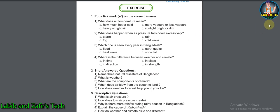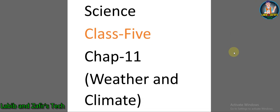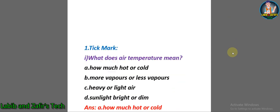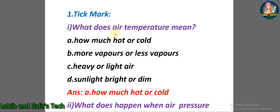Now let's go through the exercises of Chapter 11: Weather and Climate. MCQ number one: What does air temperature mean? A) How much hot or cold, B) more vapors or less vapors, C) heavy or light air, D) sunlight bright or dim. The answer is A — how much hot or cold.